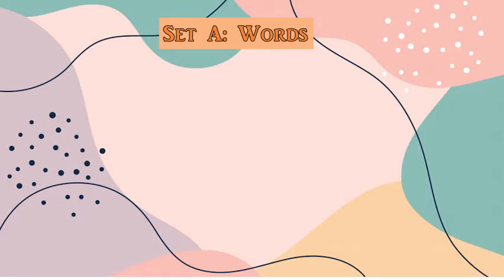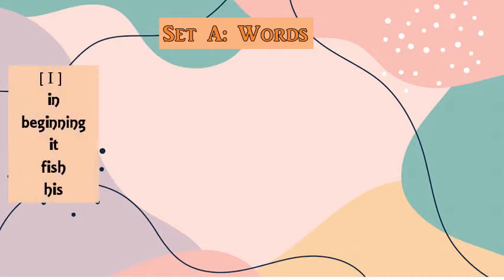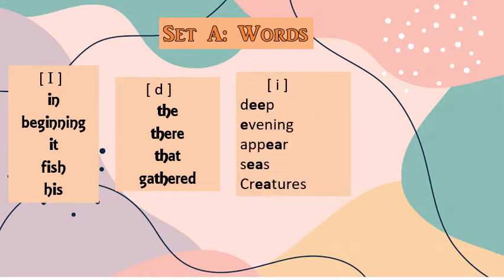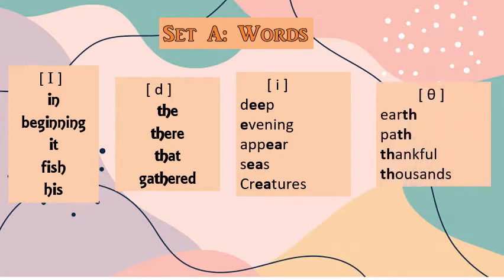At this moment, let us learn the correct pronunciation of some critical vowel and consonant sounds. I will read the word first, and you have to follow afterwards, okay? In, Beginning, It, Fish, His, The, There, That, Gathered, Deep, Evening, Appear, Seas, Creatures, Earth, Path, Thankful, Thousands. Very good.